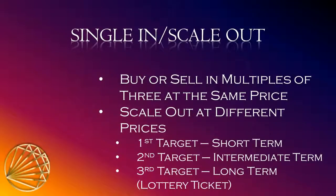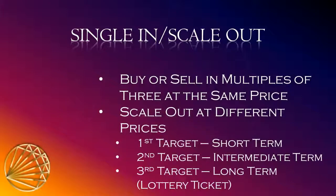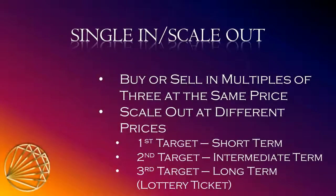What we do with the single and scale-out method is buy or sell at a specific entry point and then scale out of the trade at different intervals. As we scale out of our position we will be moving our stops in the direction of the trade. We first need a specific entry point and a level for a protective stop. From now on we will be buying or selling financial instruments with a common denominator of three — for example, 300 shares of stock, three options, three futures, three, six, or nine Forex contracts — so that we can scale out in thirds.